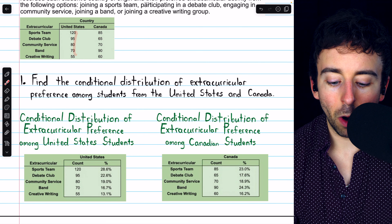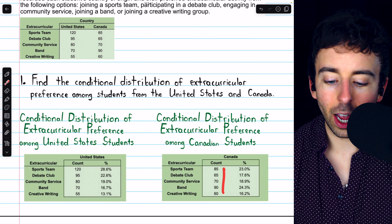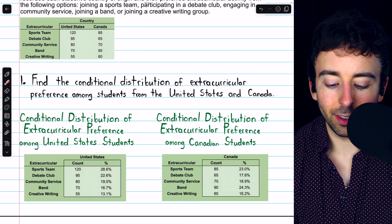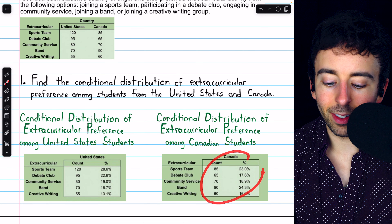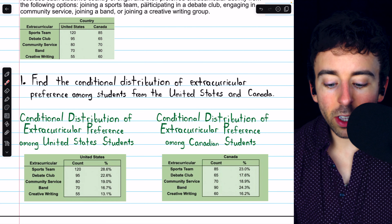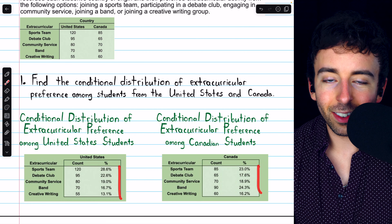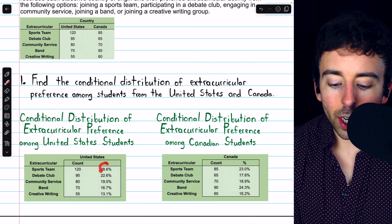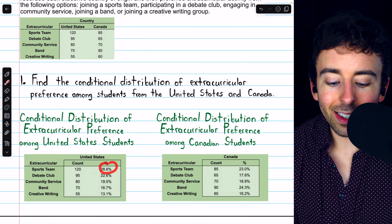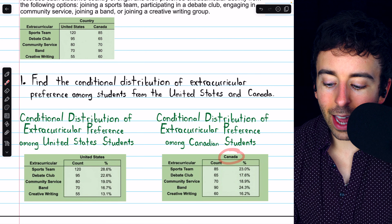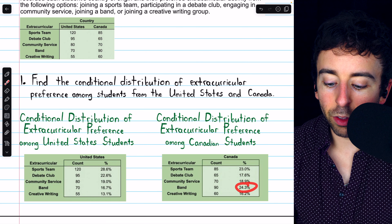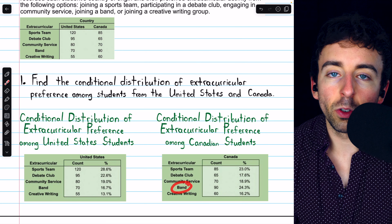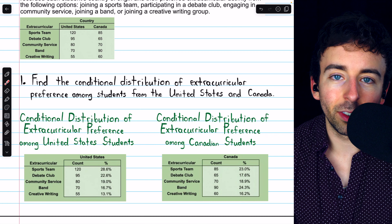Here are those conditional distributions. The United States table and the Canada table are shown with raw counts, and then the percentages are more useful. Given that someone is from the United States, there's a 28.6% chance they prefer to join a sports team. On the other hand, given the condition that someone is from Canada, there's a 24.3% chance they prefer to join band, just as an example.